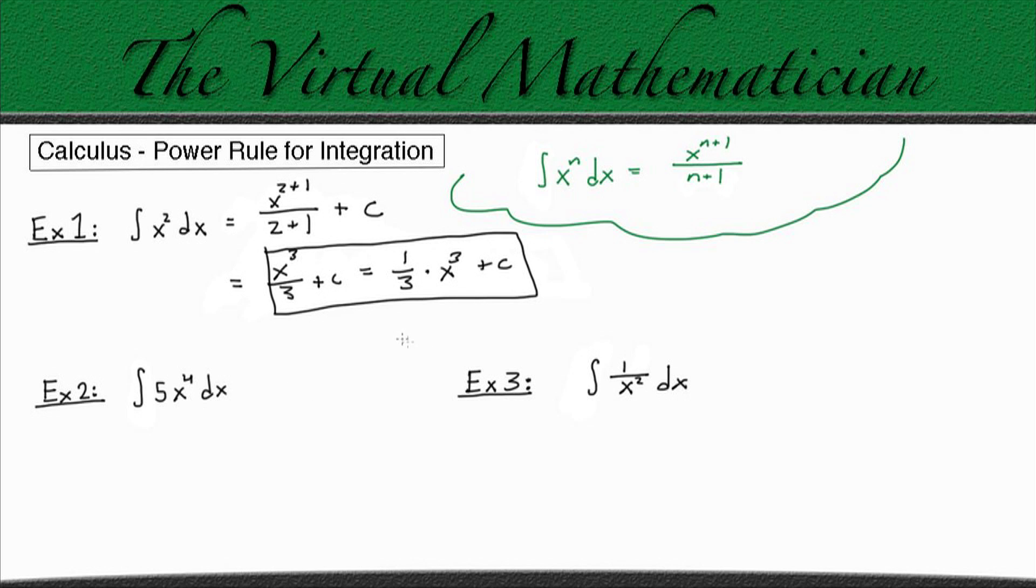Okay, so now let's look at example number 2. Here we have the integral of 5 times x to the 4th dx. So we know we can always pull out constants, so this is the same thing as 5 times the integral of x to the 4th dx. And now we can just use the power rule.